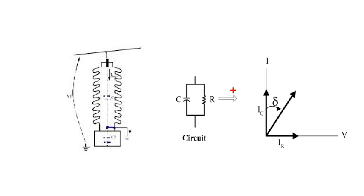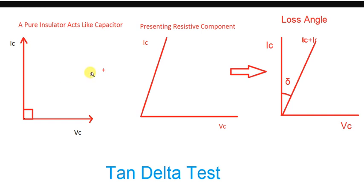If you take the loss angle test, then you can see the current leads, voltage and current leads — so that's why we have a pure capacitor with a 90-degree phase shift. In this principle we have to use a single-phase shift. We have a resistive component, so there is a current flow path — this is a resistance component.